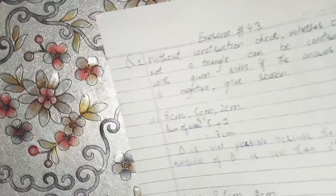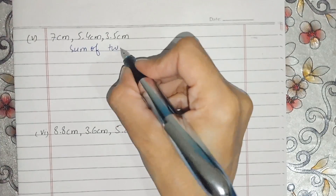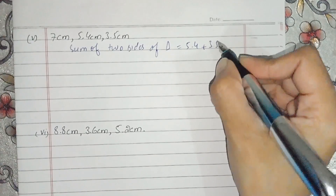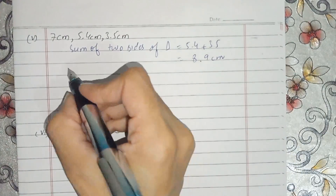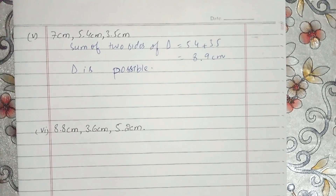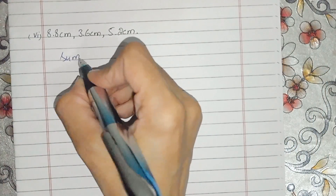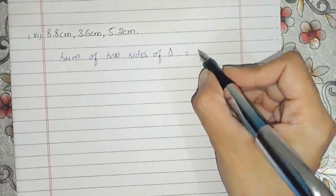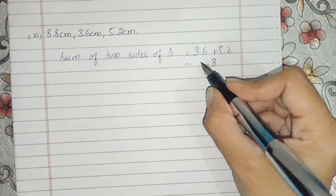Because the sum of two sides of the triangle is less than the third side. Now the fifth part: sum of two sides of triangle gives 8.9 cm, which is greater than the third side. It means the triangle is possible. Now the sixth part: sum of two sides of triangle: 3.6, 5.2, 8 and 8.8 cm.